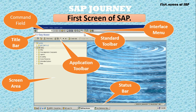This is the first screen of SAP. You can see the command field where we can enter a transaction code to run any screen. This is the title bar — whenever we run any transaction code, the title of that transaction is shown here. Below that is the standard toolbar and the application toolbar. The large area is the screen area. At the bottom is the status bar, which displays any results or messages coming from the message server. And this is the interface menu where you can change settings.